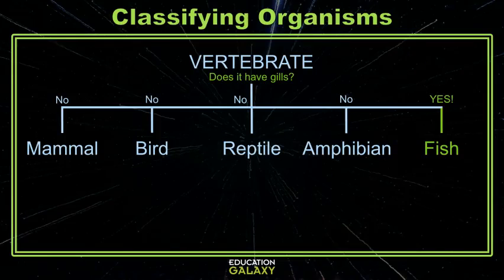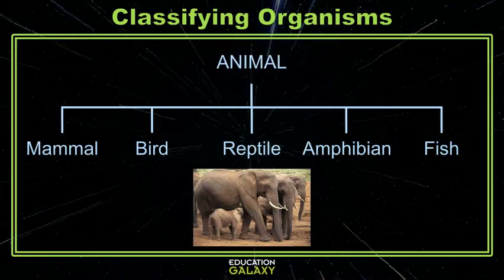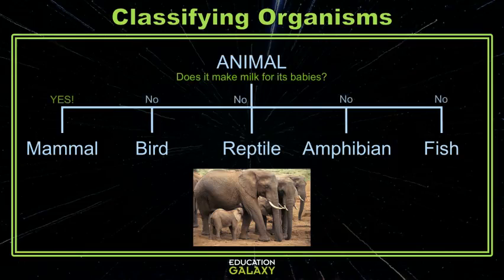Now that you know all of the different classes of vertebrates, I bet it would be really easy to classify any animal. Let's try some. Let's look at an elephant. They have hair, although sparse. They give live birth to super cute baby elephants. And the mother elephants have mammary glands that they use to feed their babies milk. They must be mammals.